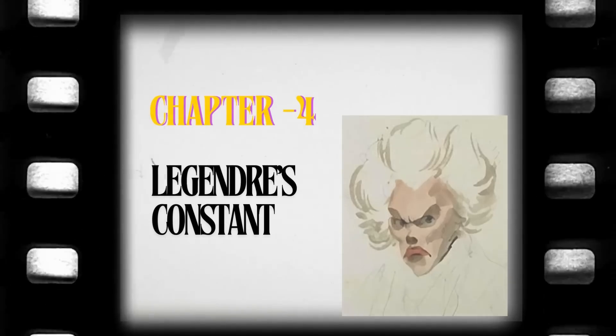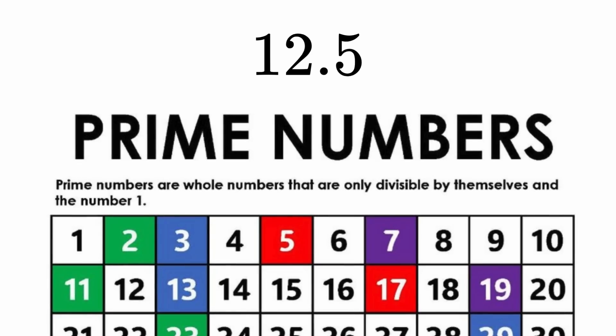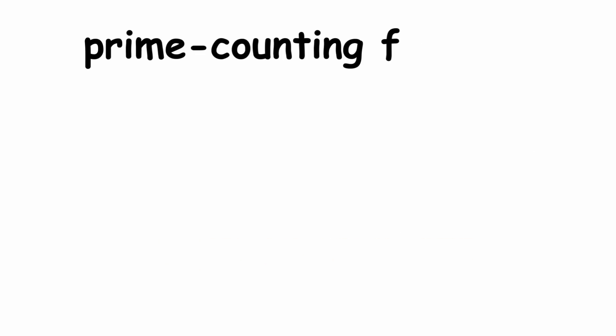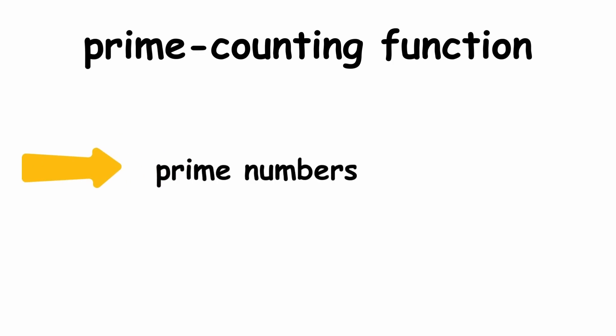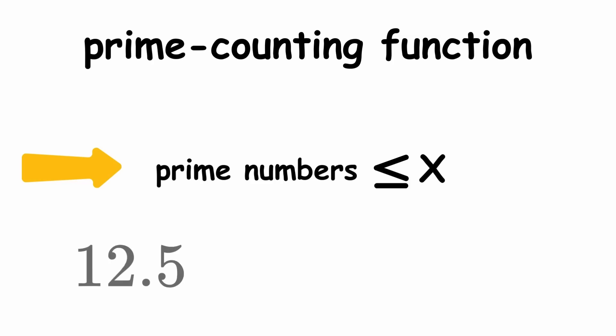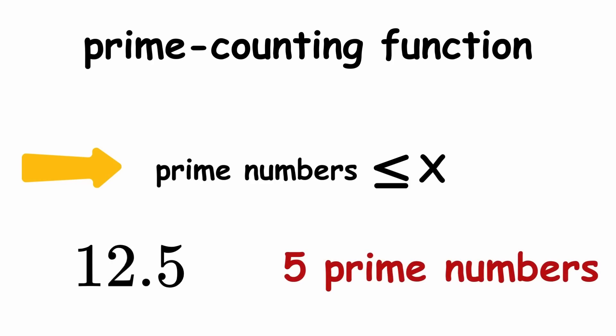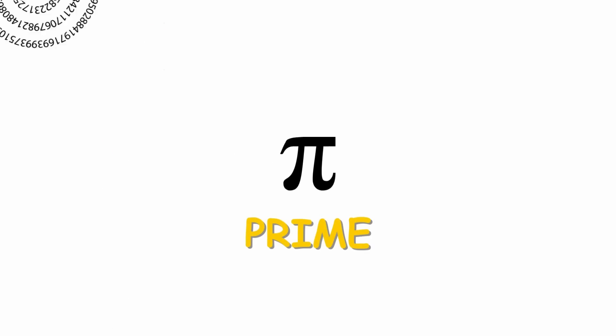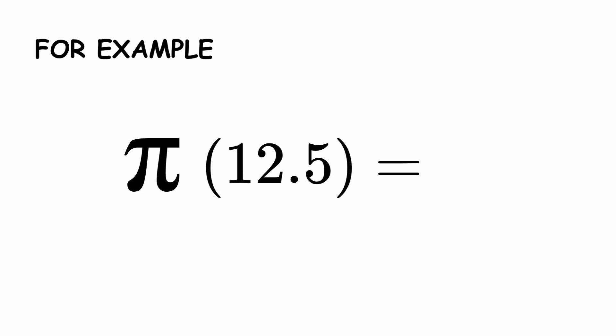Legendre's Constant. Pick any real number you like — say, 12.5. Now list out all the prime numbers less than or equal to that number and count how many you have. In our case, those are 2, 3, 5, 7, and 11 — so that's five prime numbers. The prime counting function, as the name suggests, counts how many prime numbers are less than or equal to a given number. It is denoted by the Greek letter pi, for prime, and has no relation to the number pi. So we would say, for example, that pi of 12.5 equals 5.